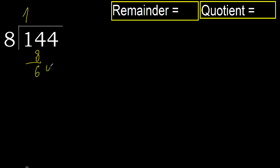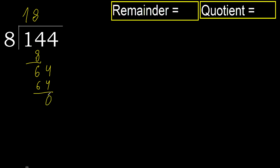Next. 64. 8 multiplied by 8 is 64. 64 is not greater. 64 minus 64 equals 0.